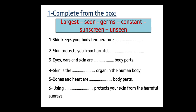Now let's do an exercise. Number one: skin keeps your body temperature constant. Number two: skin protects you from the harmful germs. Number three: eyes, ears, and skin are seen body parts. Number four: skin is the largest organ in the human body. Number five: spoons and heart are unseen parts. Number six: using sunscreen protects your skin from the harmful sun rays. You have to know that our skin is the largest organ in the human body and melanin gives our skin its color.